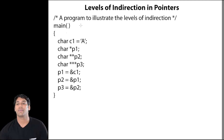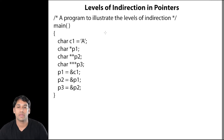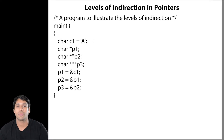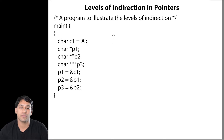Let us suppose we are having this program. In this program, we are having multiple levels of indirection. What is indirection? Indirection means you are pointing to some other location, you are pointing to some other different directions. So let us explore what is happening in this program.